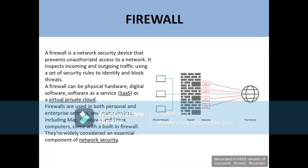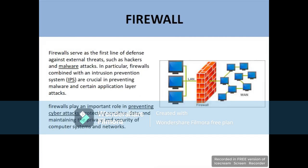Firewalls are basically the first line of defense against external threats such as hackers and malware attacks. Combined with an intrusion prevention system (IPS), they are crucial in preventing malware and certain application layer attacks as well.